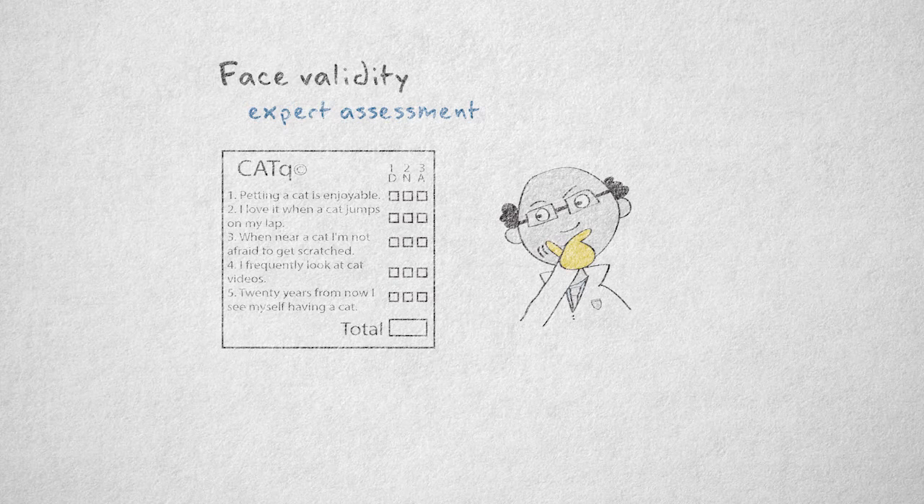We could determine its face validity. Face validity refers to how well the instrument represents the property according to the assessment of experts. An expert opinion can be useful in the development phase, but of course experts can always be wrong.